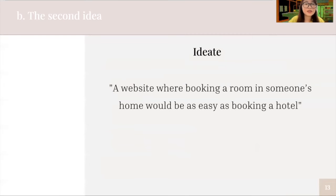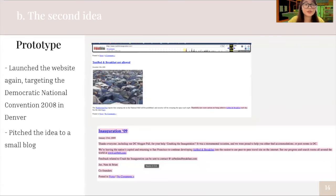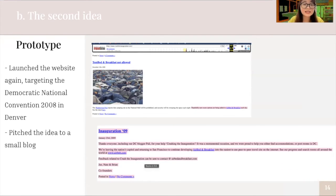In the ideate stage, after learning all of that, the two founders defined the model for their business: a website where booking a room in someone's home would be as easy as booking a hotel. Moving on to the prototype part, they launched their website again targeting the Democratic National Convention 2008 in Denver — another event that could make the market saturated. Yet the co-founders realized one problem: the network effect, meaning they could not attract hosts without attracting guests, and could not attract guests without having hosts.